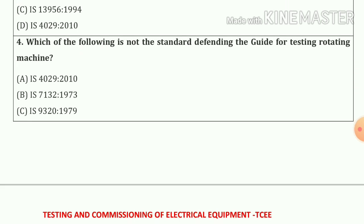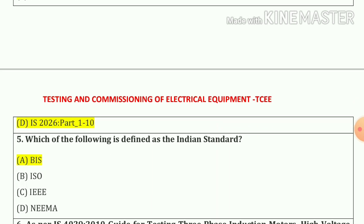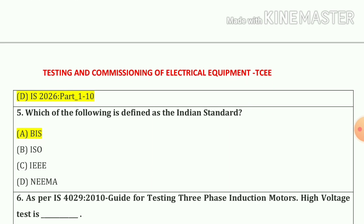Question number four: Which of the following is not the standard defining the guide for testing of rotating machine? So our answer is option D.